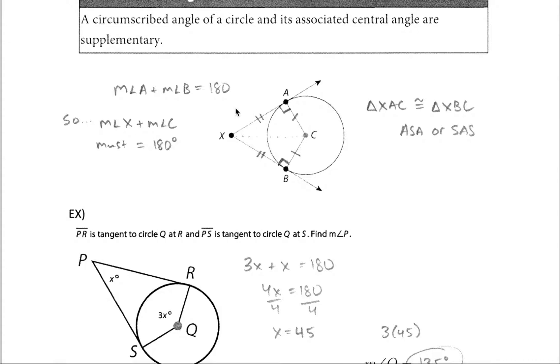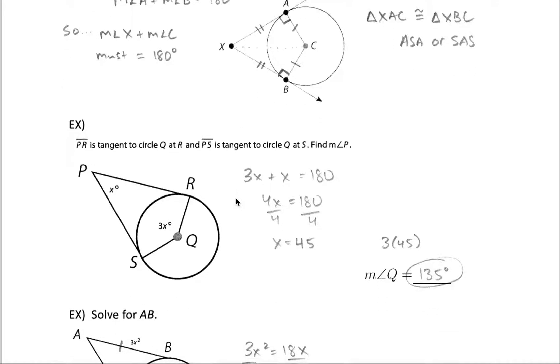So the two main things are that our circumscribed angle and these central angle's measure are supplementary, and these tangent line lengths are congruent. Let's practice those two concepts.